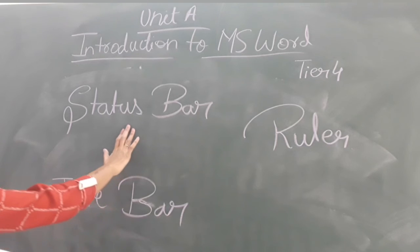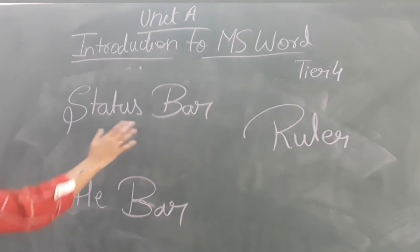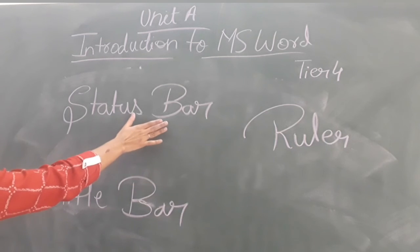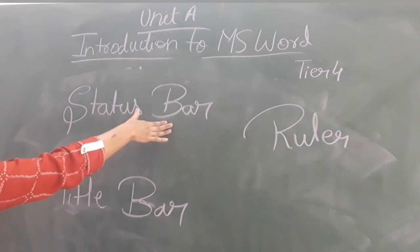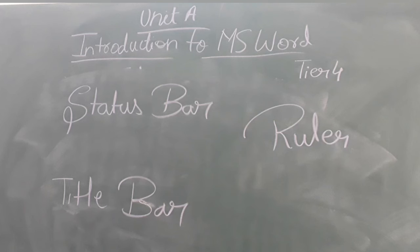Now the next is the Status Bar. And this Status Bar displays the current status. Means on whichever thing you are working, on whichever screen you are working or on whichever file you are working, this Status Bar displays that thing on which you are currently working. So this Status Bar also displays the page number and if you are working on the MS Excel sheet, it displays the sheet on which you are working.